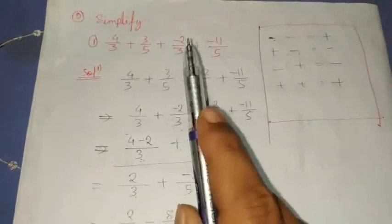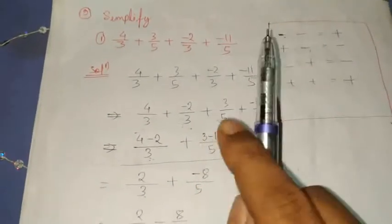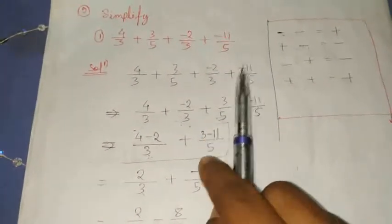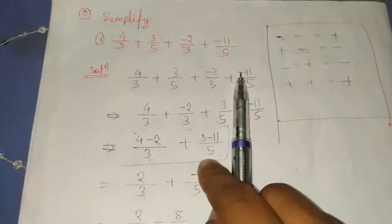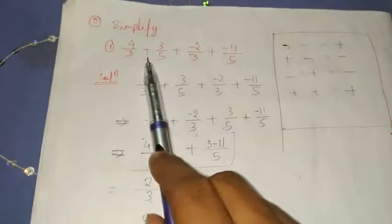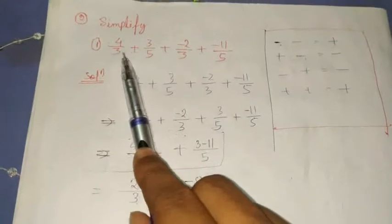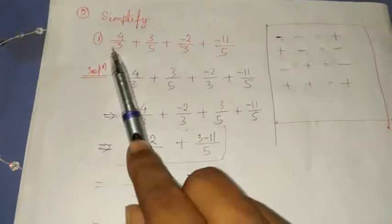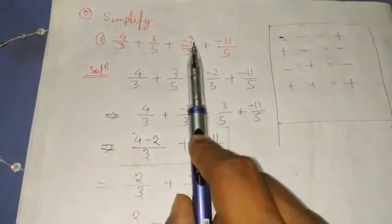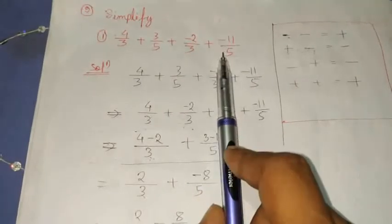There are four basic mathematical operations: addition, subtraction, multiplication and division. Let's do the first equation. Here is 4 by 3 plus 3 by 5 plus minus 2 by 3 plus minus 11 by 5.